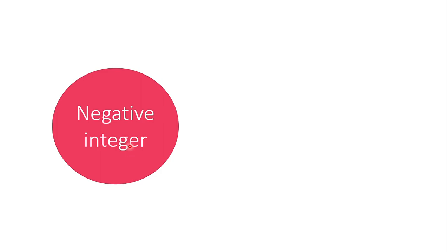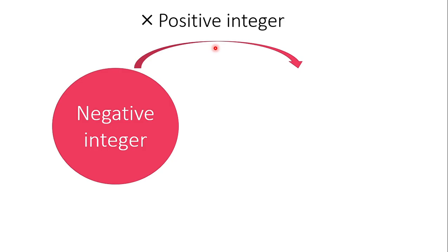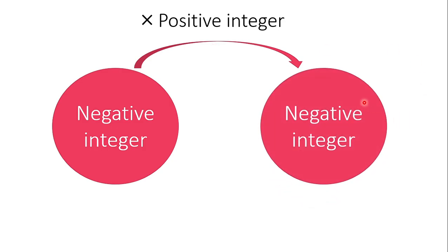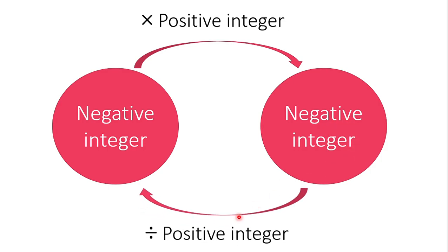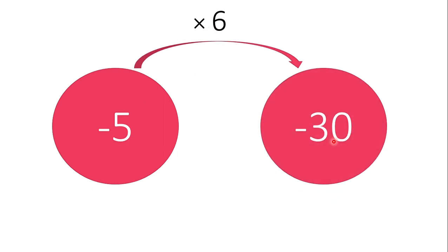Next, how about if we multiply a negative integer by a positive? The product is a negative integer. For example, negative 5 times positive 6, the product is negative 30. But when we divide negative 30 by 6, the quotient is negative 5.